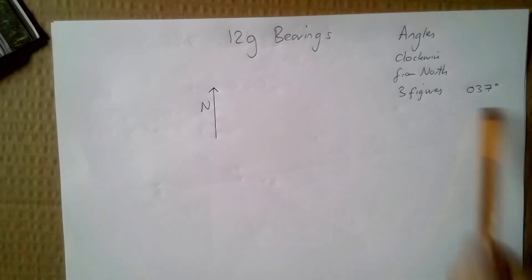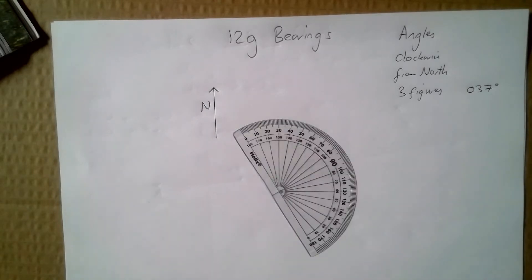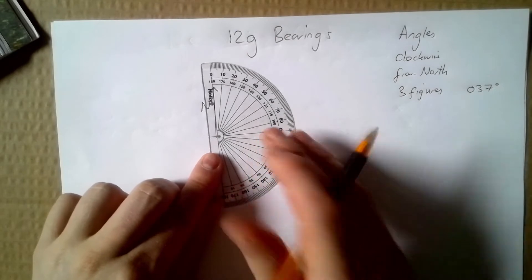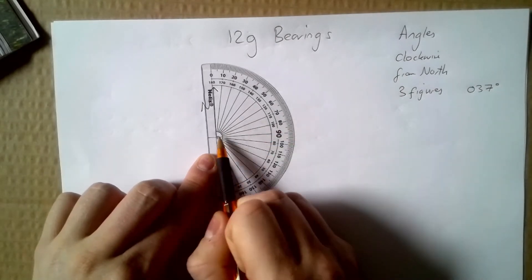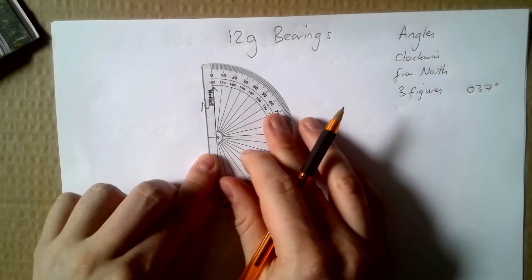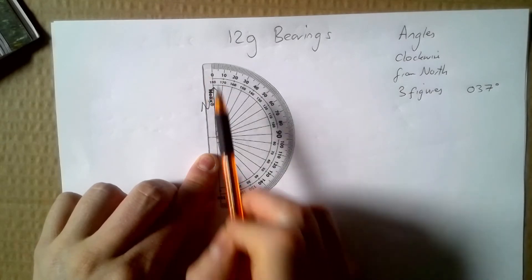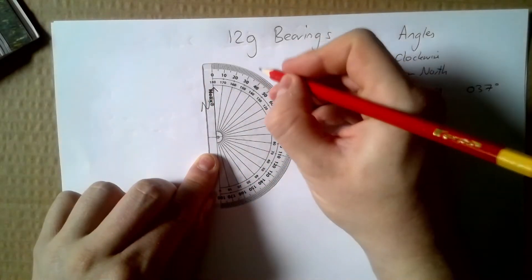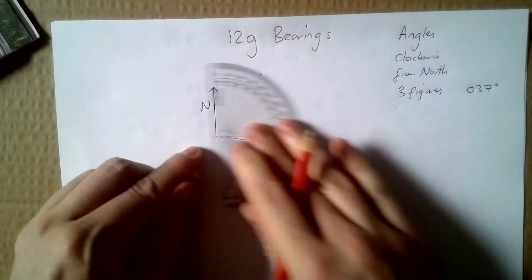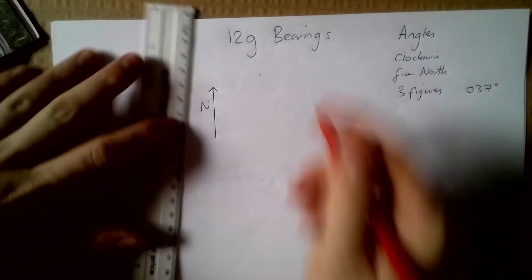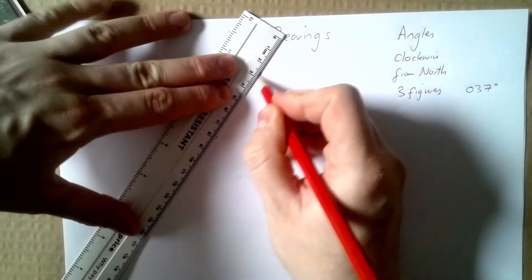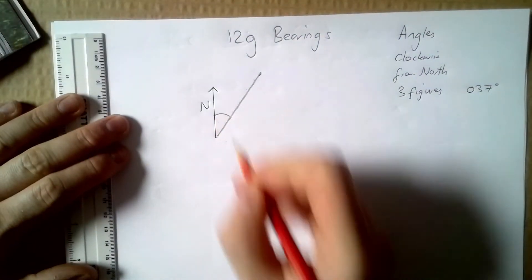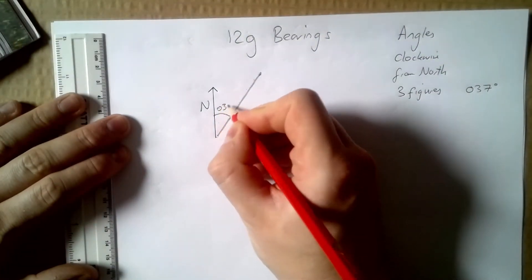Now if I wanted to draw this angle of 037, then I will get my protractor, line the protractor up so the center is on the corner, north is going to 0, and then I'm looking for 37 degrees. Then using a ruler I can line that up and this angle here is the correct bearing of that.